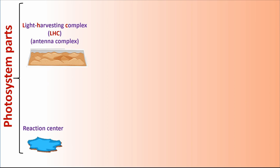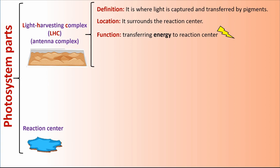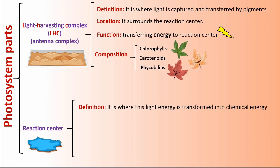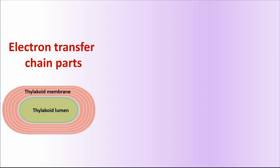Photosystem has two parts: the light harvesting complex, or LHC, or antenna complex; and the reaction center. In the light harvesting complex, light is captured and transferred by pigments. It surrounds the reaction center, and its function is transferring energy to the reaction center. LHC composition includes chlorophylls, carotenoids, and phycobilins. The reaction center is where light energy is transformed into chemical energy, surrounded by the light harvesting complex, and its function is transferring electrons.